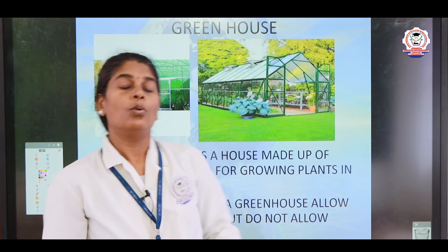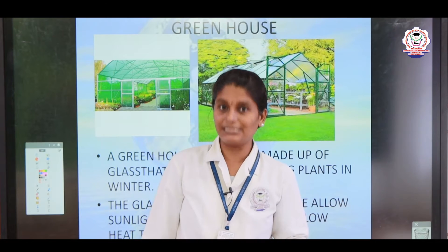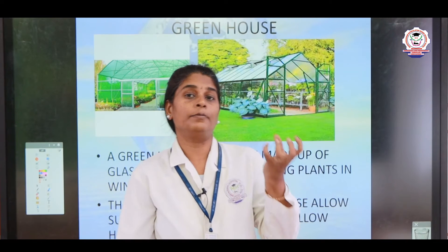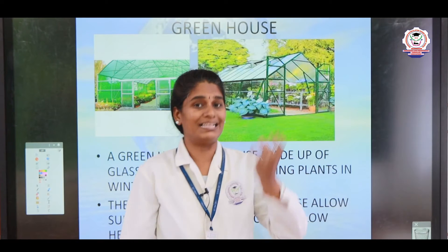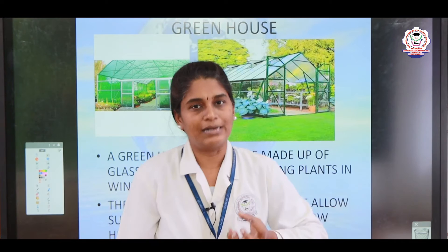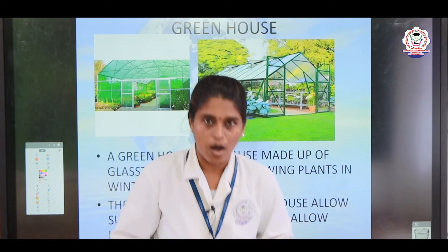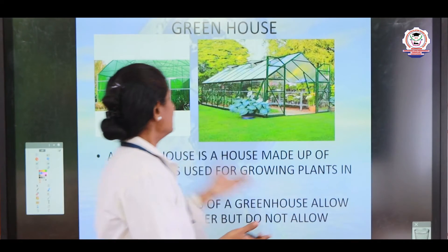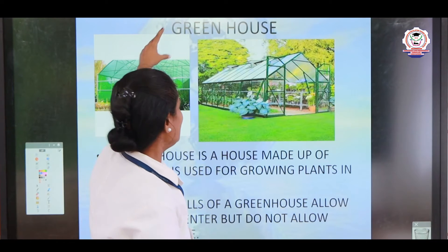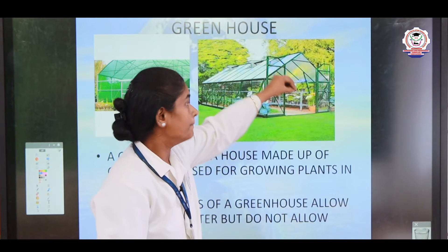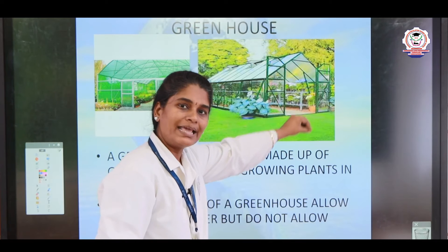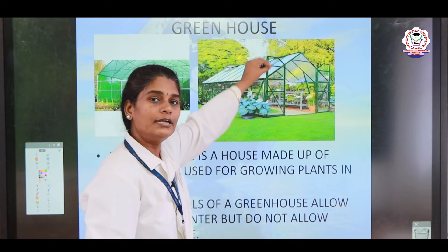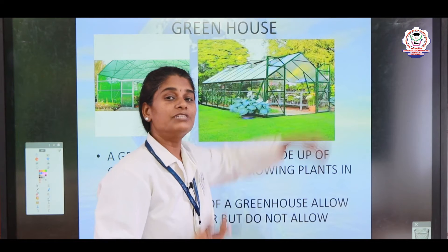Why is a greenhouse made of glass? In some hilly areas, plants cannot get proper carbon dioxide and cannot prepare food from the air because of the cool climate. To keep the plants warm, they are kept inside a greenhouse. The sun gives out heat, which enters the greenhouse but does not escape. The heat stays inside the greenhouse, which is good for plants to grow and prepare their own food.